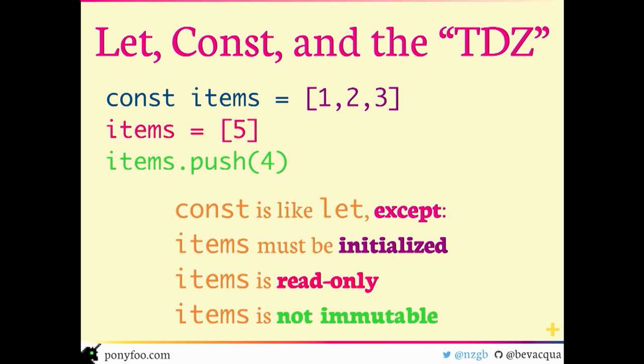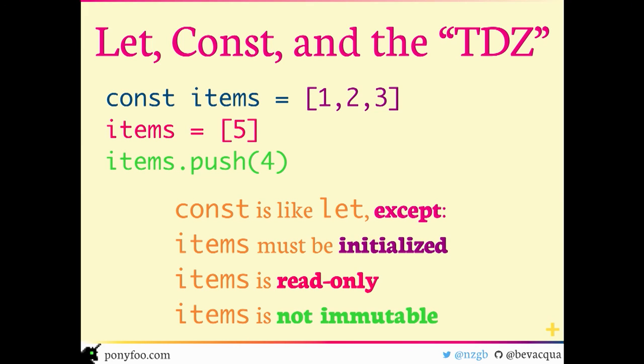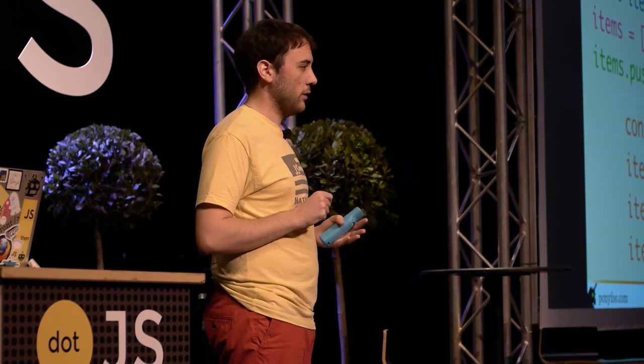Then there are constants. Constants are basically the same as 'let' except that you must declare them with an initializer so they always have a value assigned. These variables are read-only, meaning you can't re-assign once the variable has been declared. However, they are not immutable — if you have an array you can still push to it and get an array with a new item, because the constant is the variable reference that can't change, not the object it points to. Similarly, with an object you can add or delete properties. Be aware of that difference when dealing with 'const'.